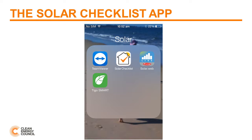Next up, we have the Solar Checklist app. Again, there is a dedicated video on how to install and use this smartphone app. The key thing to know is that you must perform testing and commissioning of all your installed PV systems, as you would with any other electrical work. Note that there is a free smartphone app that means you can do it easily and in accordance with Australian Standard 5033.